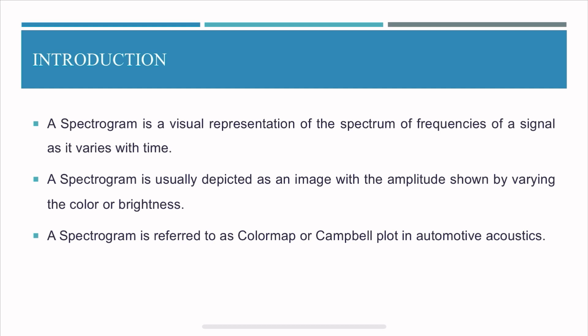Now a spectrogram is referred to as color map or Campbell plot because it's a plot of two axes and the third axis is in a color scale. Now we'll get to those details later in this video.